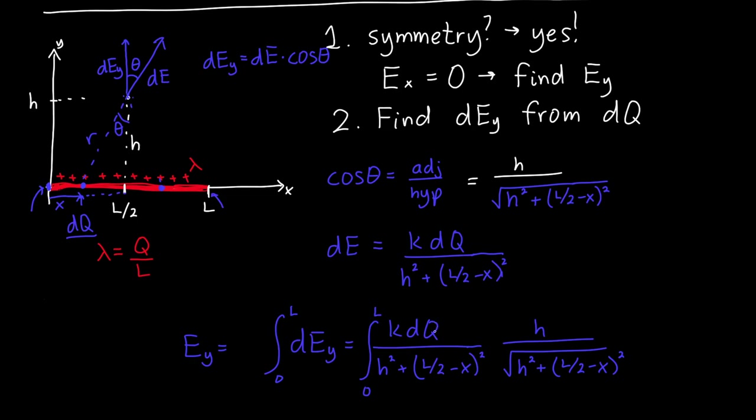Now, because this is an integral in terms of X, we need to turn this DQ into something that has DX in it. And in particular, because we know that this has a charge per unit length lambda, our DQ is just lambda DX. So DX is a tiny little bit of length. Lambda is the charge per unit length. And so lambda DX is the charge of a tiny little bit of that line charge. And so we can replace DQ here with lambda DX.